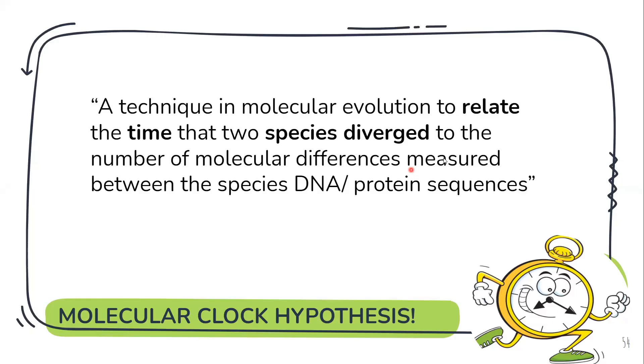Now what is this molecular clock hypothesis and why is it being used? So basically it is used to relate the differences between the genetic material of two species. So consider ape and man. We know that these two species have diverged from a common ancestor. Now if you want to relate the time that has been taken to get the differences between their genetic material, you can use this molecular clock hypothesis.